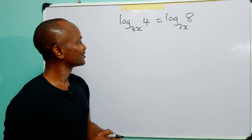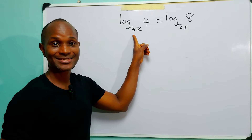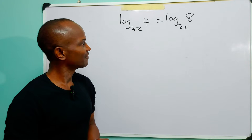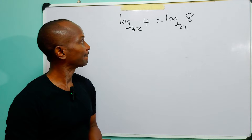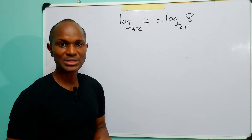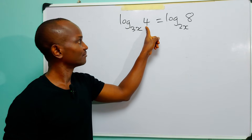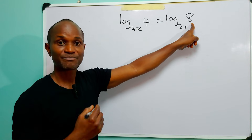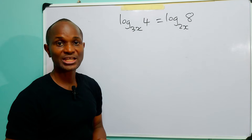Hello and welcome. In today's tutorial we have a log equation in which the unknown x is in the base. Obviously the first step to solving this equation would be to change the base, but then the question becomes: what base do we change to? When you look at this number, four is 2 squared, and eight is 2 cubed, so it would be best for us to change to base two.